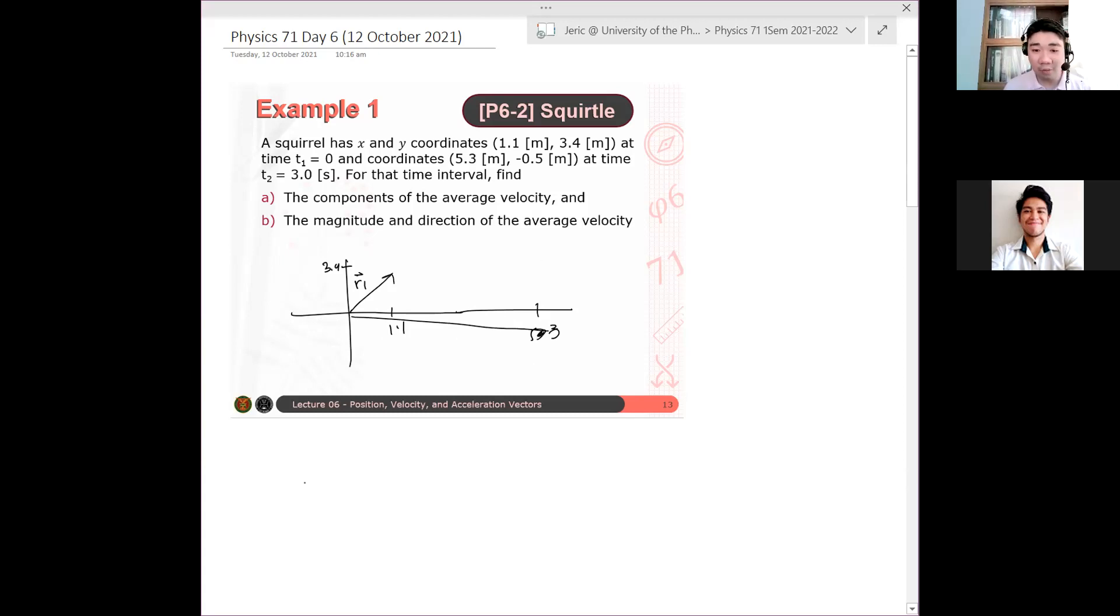So in that case, what you need to do is, what's the initial position of the squirrel? You have your coordinates here. Convert these coordinates into vectors. So you have your x-coordinate, your abscissa here. So we have 1.1 meters i-hat. And you have 3.4 meters here. Your y-coordinate, 3.4 meters. Therefore, you have 3.4 meters j-hat. And that's your initial position.